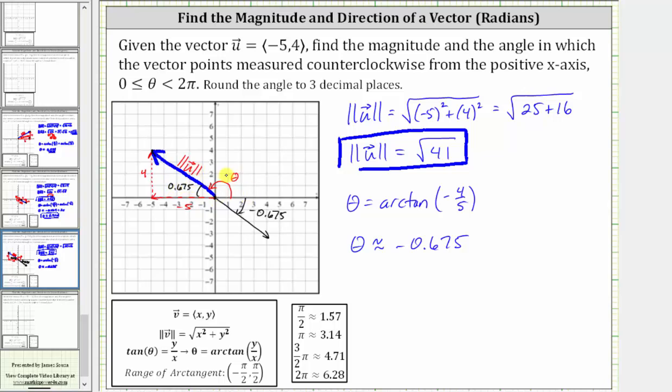Which means to find our angle theta, we can take pi radians and subtract 0.675 radians. And if we wanted to, we could just add pi radians to negative 0.675 radians. The result would be the same.